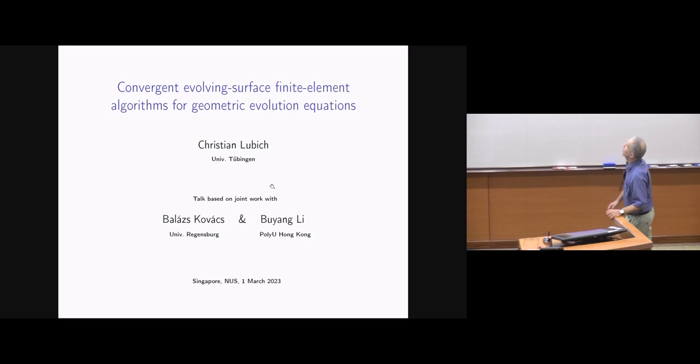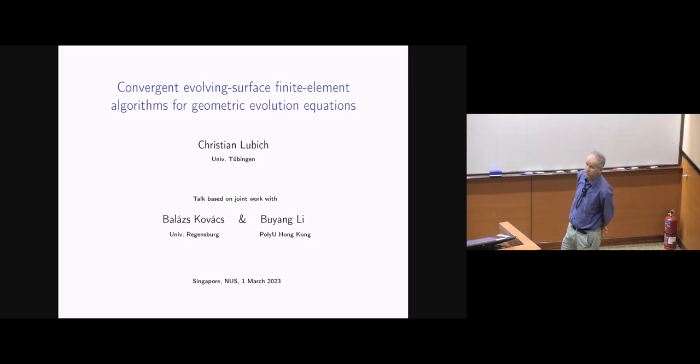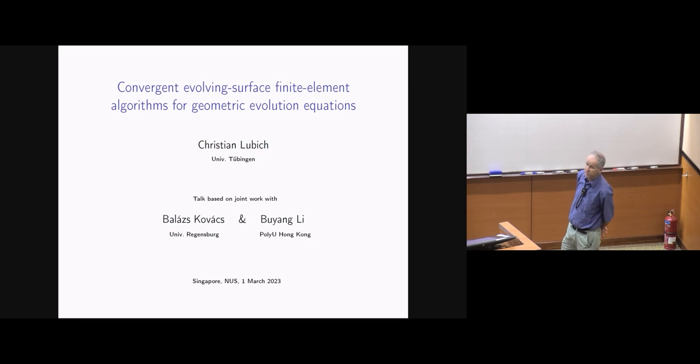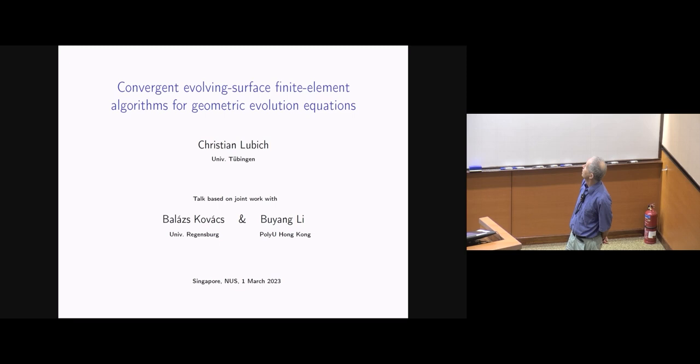The question is: with which methods can you compute this, and can you derive methods for which you get guaranteed convergence as the mesh is refined? I will talk about convergent evolving surface finite element algorithms — methods to be used for computing geometric evolution equations and moving surfaces, possibly coupled to other equations.